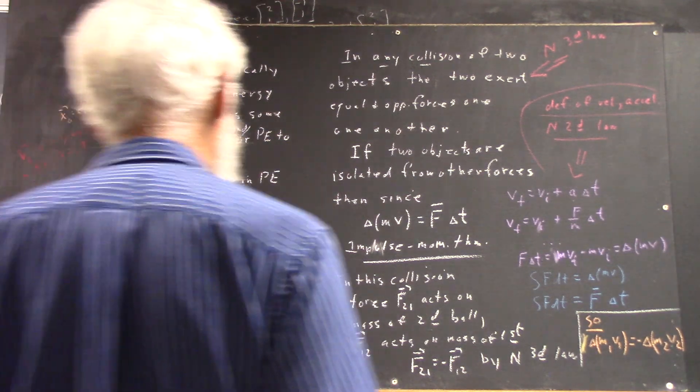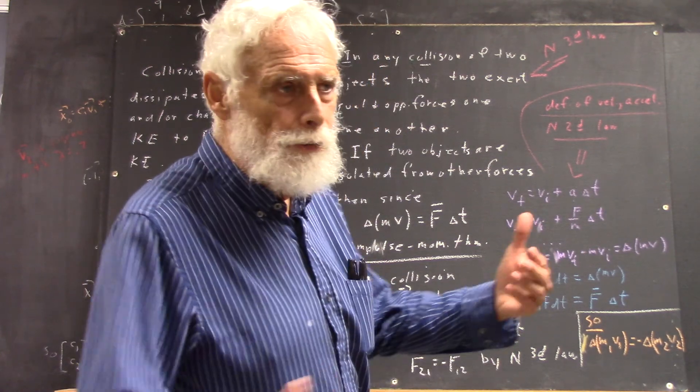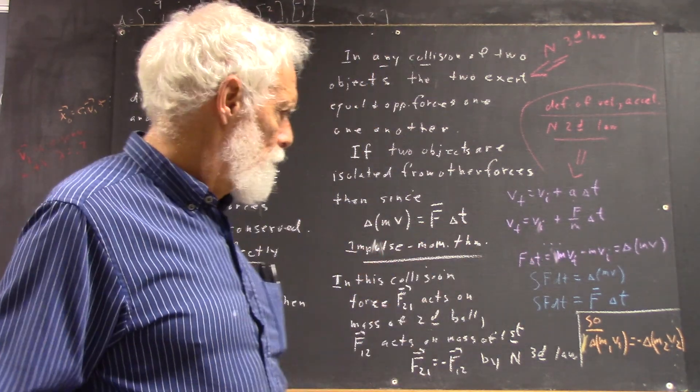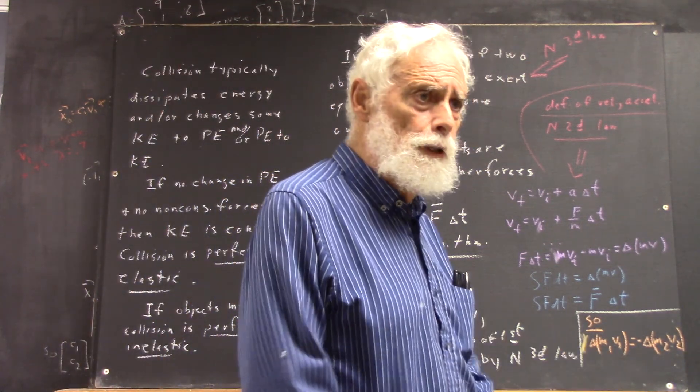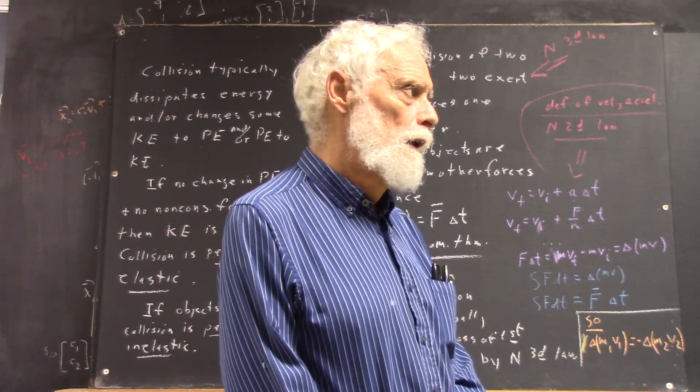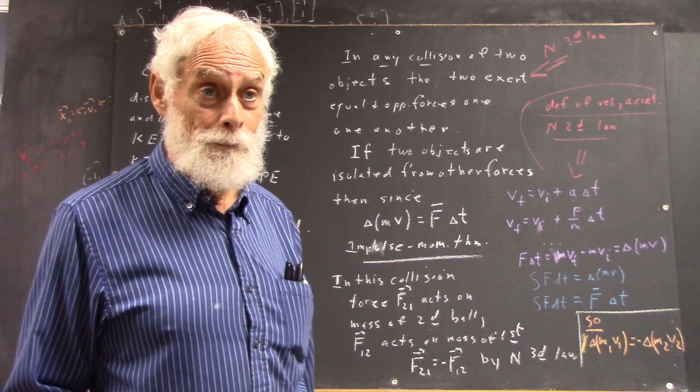So the change in M1V1 is equal and opposite to the change in M2V2. Now, what does that imply about the collision you observed? How do the masses of the balls compare?